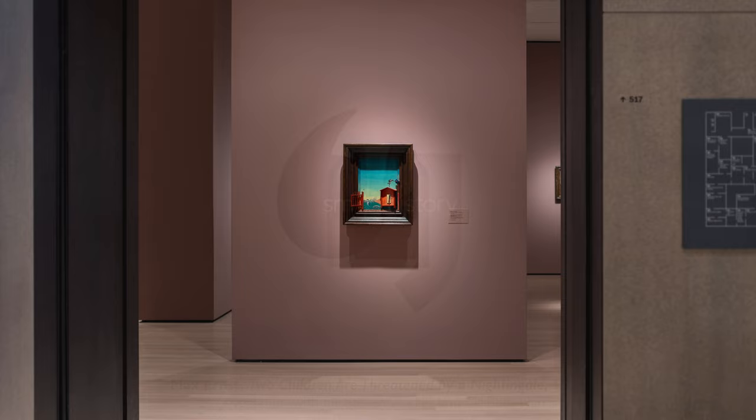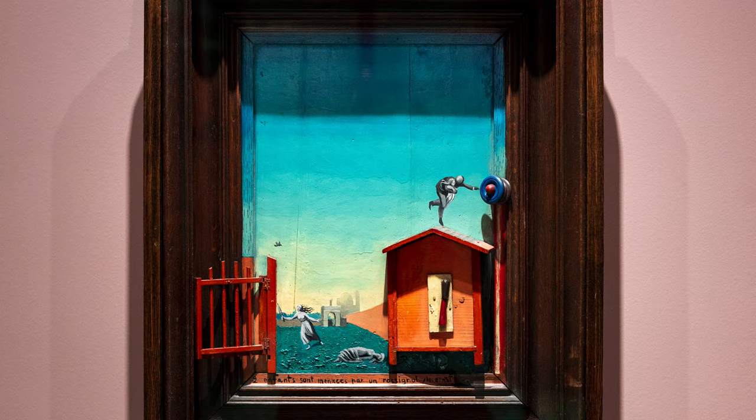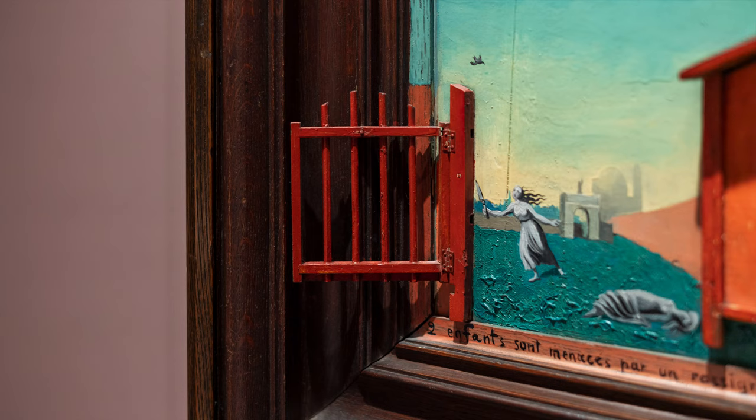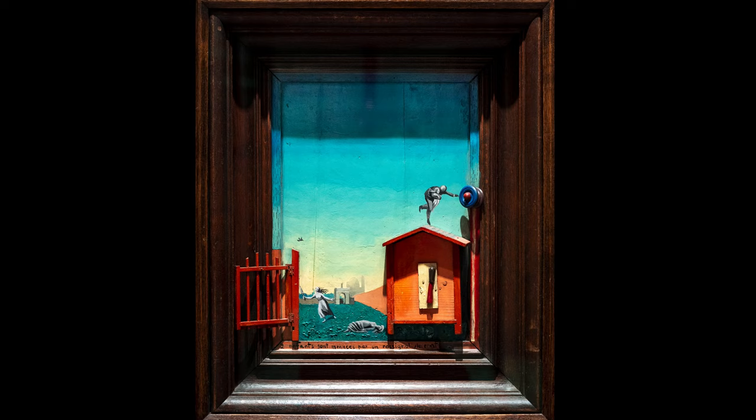We're in the Museum of Modern Art and we're looking at a painting by Max Ernst, 'Two Children Are Threatened by a Nightingale,' and this isn't a painting in the traditional sense — there's stuff in it. A lot of stuff actually that emerges toward us from the painting: there's an open gate, there's a rudimentary house with some other objects stuck on top of it, and there's something that looks like a knob.